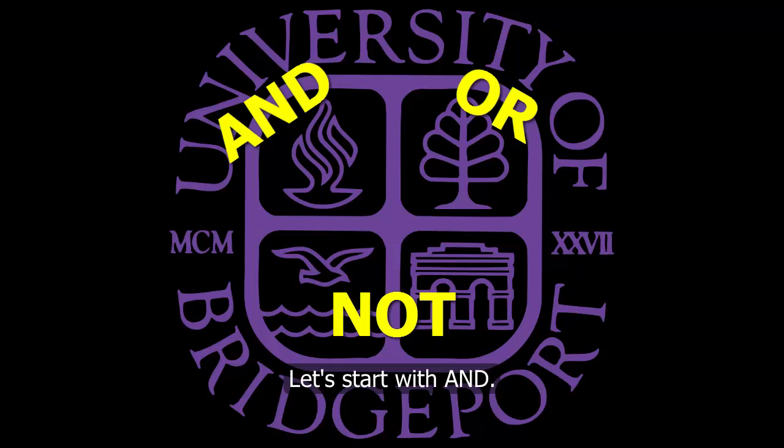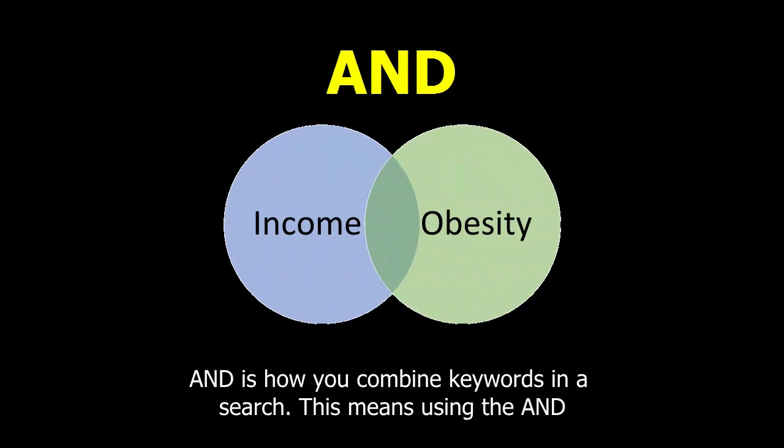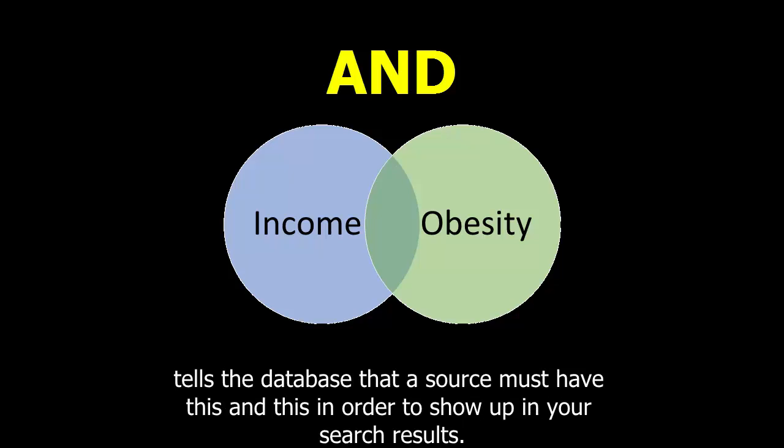Let's start with AND. AND is how you combine keywords in a search. Using AND tells the database that a source must have this AND this in order to show up in your search results.